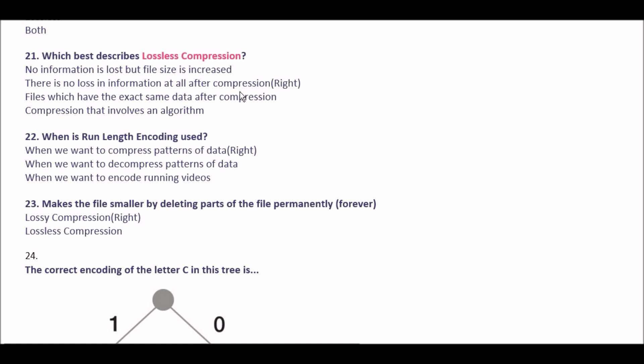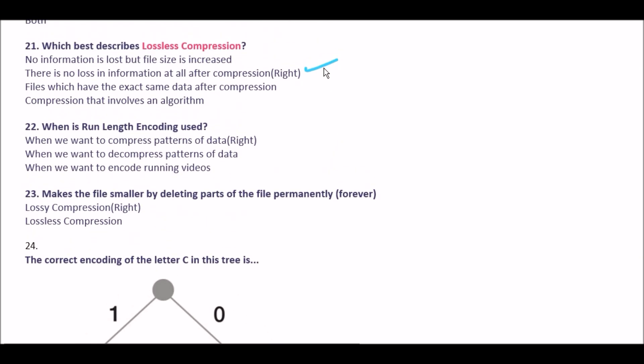Next question: which best describes lossless compression? Option A no information is lost but file size is increased, option B there is no loss in information at all after compression, option C files have the exact same data after compression, option D compression that involves an algorithm. The right answer is option B: there is no loss in information at all after compression. Lossless compression is used for text and spreadsheet files.